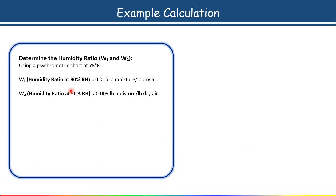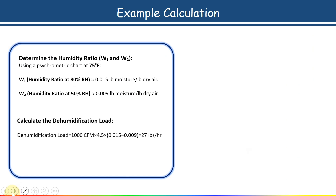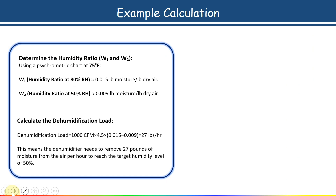Now substitute the values into the dehumidification load formula: Q = 1,000 CFM, conversion factor 4.5, W1 = 0.015, W2 = 0.009. The result is 27 pounds per hour. This means the dehumidifier needs to remove 27 pounds of moisture from the air per hour to reach the target humidity level of 50%. This is how we select and size the dehumidifier. Please like and subscribe to the channel for more informative content.